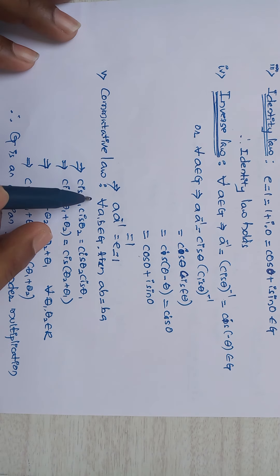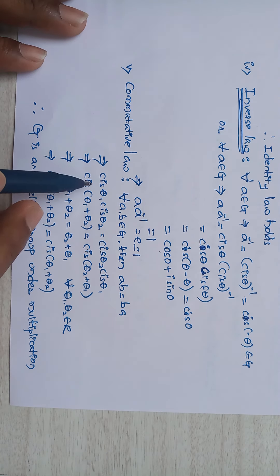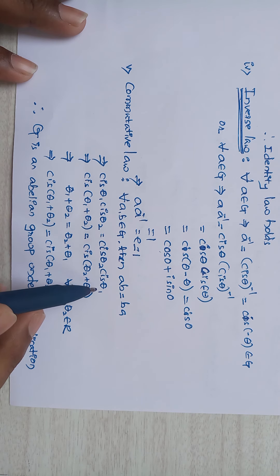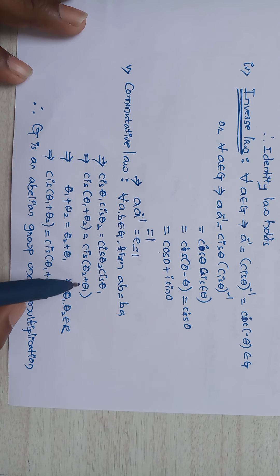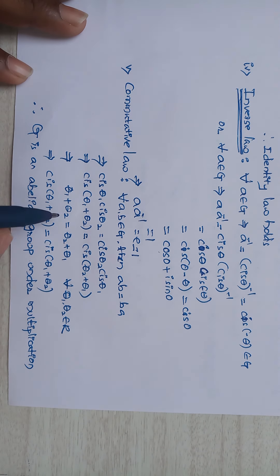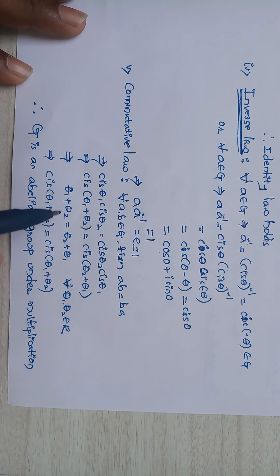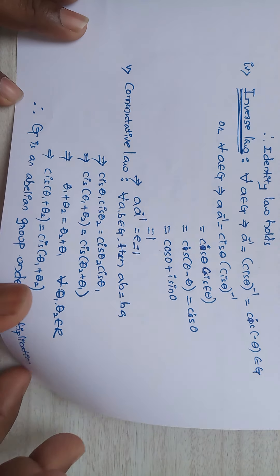Commutative law: for all a, b ∈ G, a·b = b·a. That implies cis θ1 · cis θ2 = cis(θ1 + θ2) and cis θ2 · cis θ1 = cis(θ2 + θ1). Since θ1 + θ2 = θ2 + θ1, we have cis(θ1 + θ2) = cis(θ2 + θ1). Therefore commutative law holds, and G is an abelian group under multiplication.